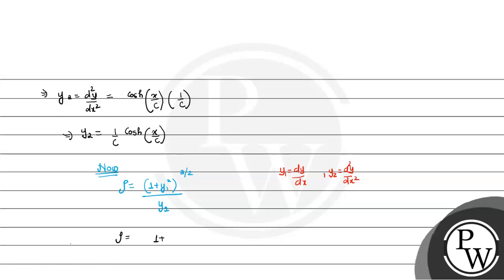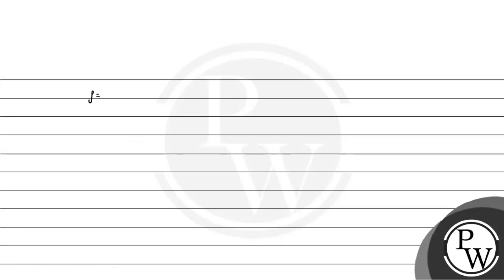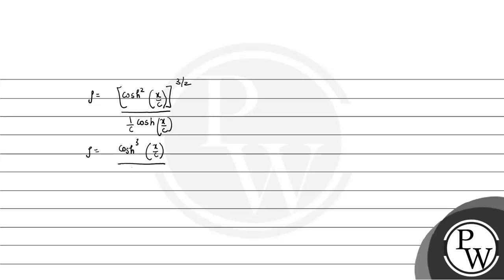Substituting the value of y1: we get (1 + sinh²(x/c))^(3/2) divided by (1/c)·cosh(x/c). Using the identity 1 + sinh²(x/c) = cosh²(x/c), this simplifies to cosh³(x/c) divided by (1/c)·cosh(x/c).